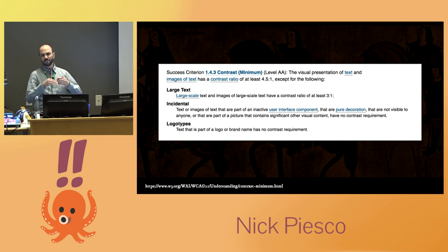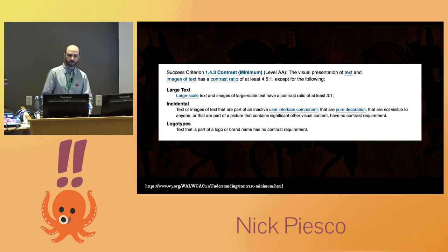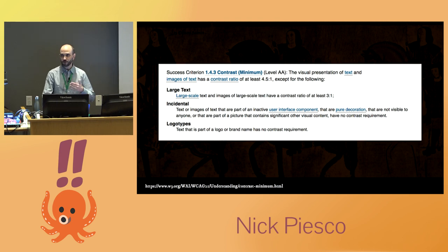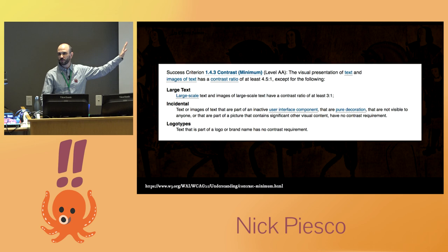So level AA, kind of mid-range accessibility: you want to hit a contrast ratio of at least 4.5 to 1, except for large text, which you have to hit a ratio of 3 to 1. By the way, this is text on an image — that's not accessible, don't do this in your product.